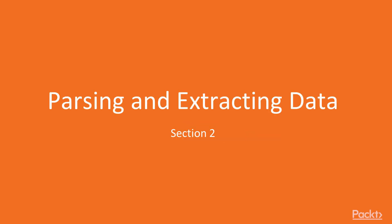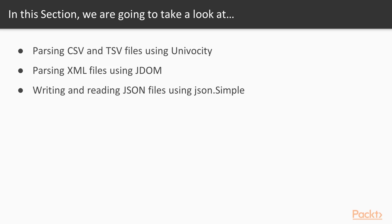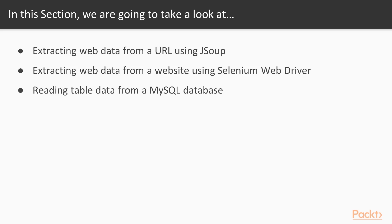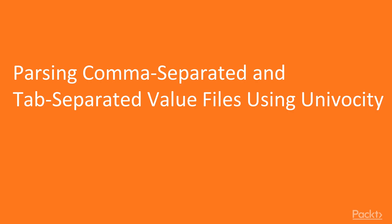Hi guys, this is our new section: Parsing and Extracting Data. We will start off this section with parsing CSV and TSV files using Univocity, and parsing XML files using JDOM. We would then write and read JSON files using JSON-Simple. Later on, we will extract web data from a URL using JSOUP and from a website using Selenium WebDriver. Lastly, we would read table data from a MySQL database. Let's start with the first video: Parsing Comma Separated and Tab Separated Value Files Using Univocity.